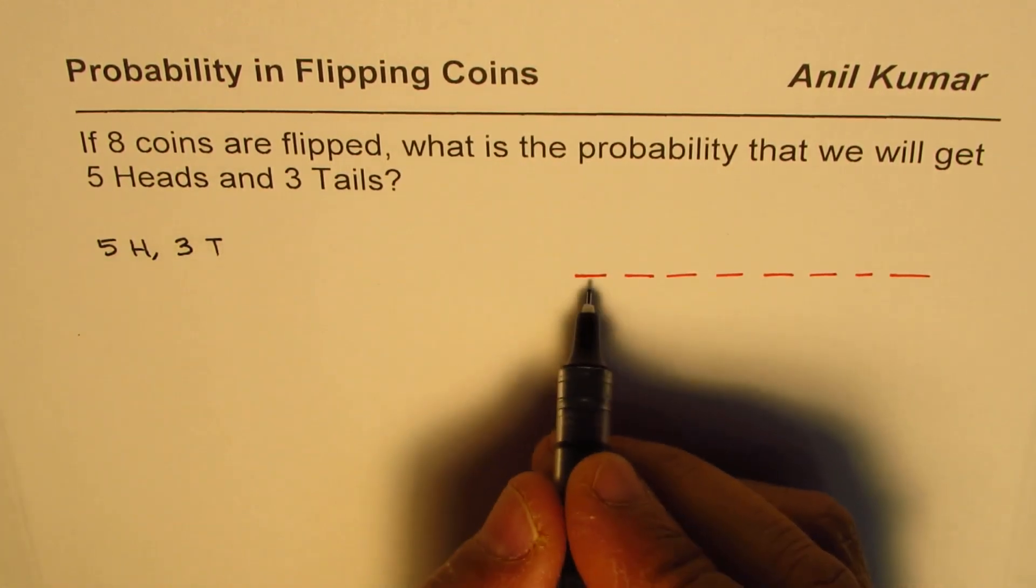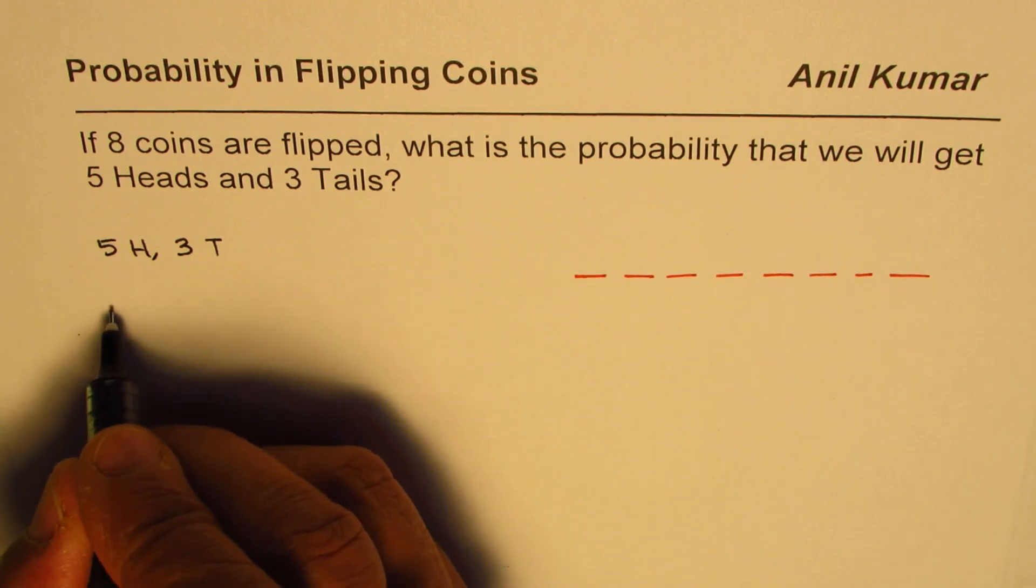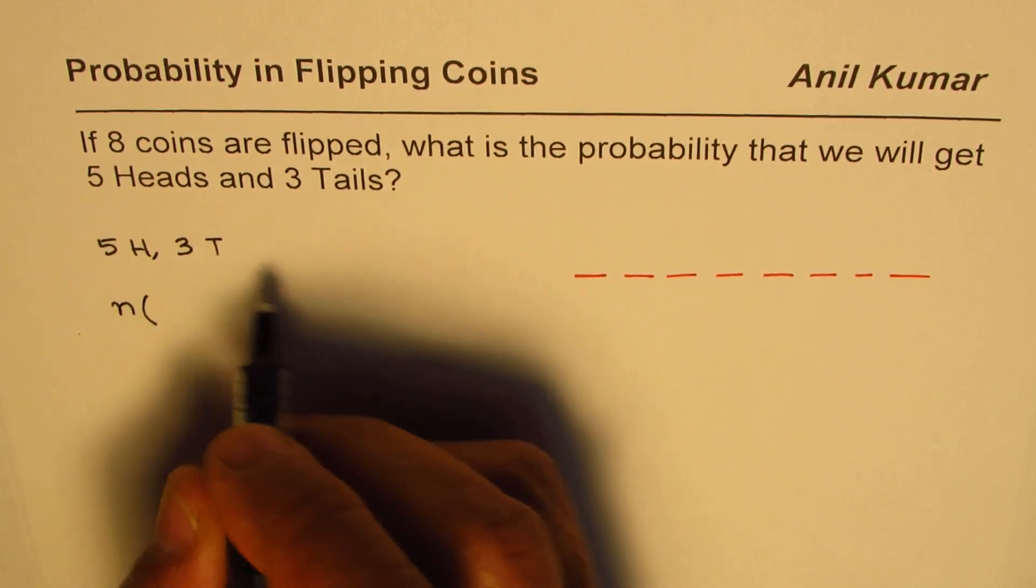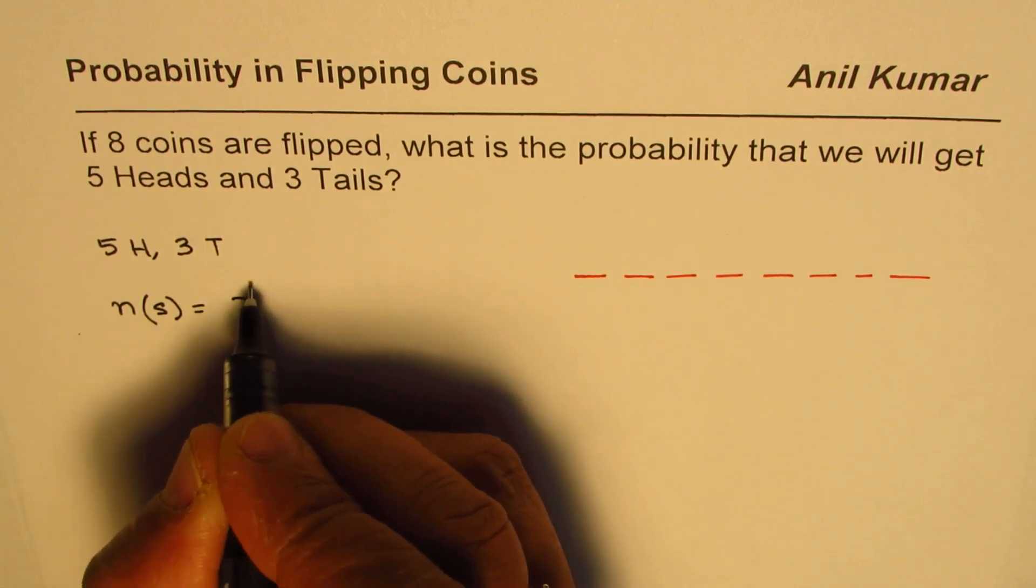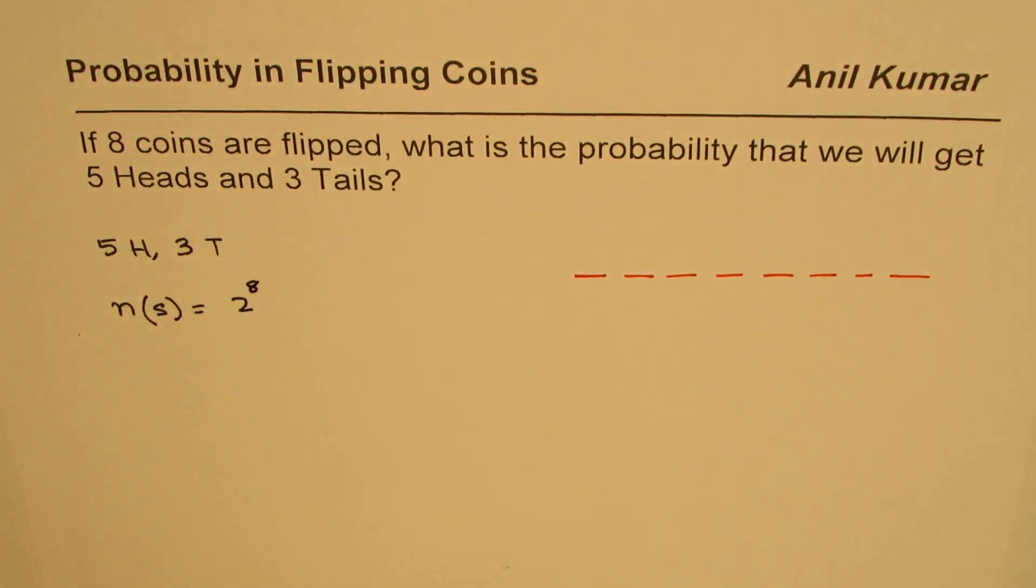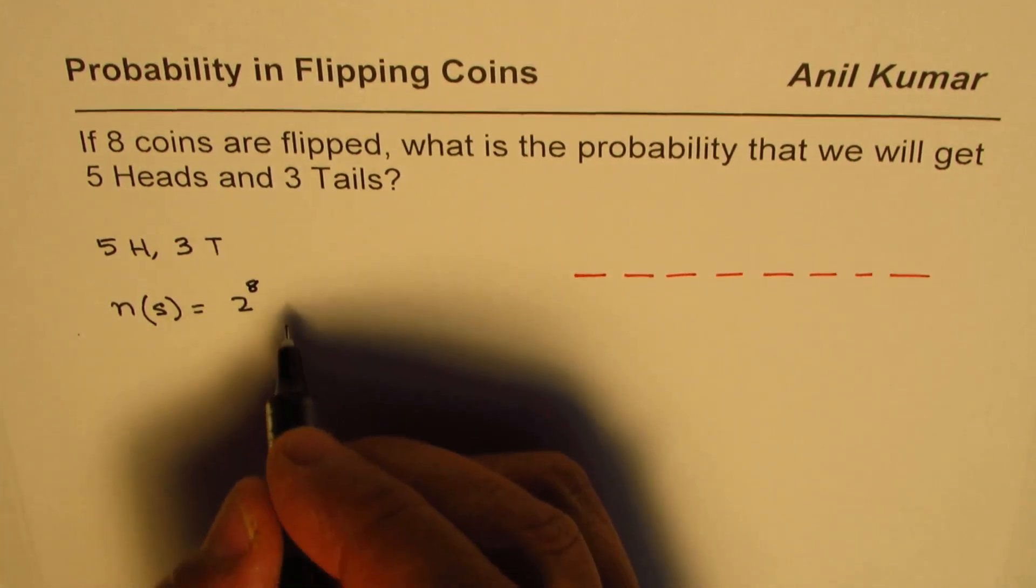Now in this case, since 8 coins are flipped, total number of options which we have, that is the sample space, is 2 to the power of 8. So those are total number of options or the outcomes. These are total outcomes.